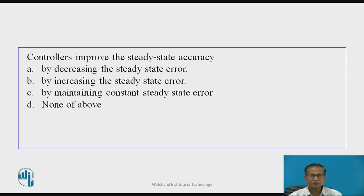Try to answer this question: controllers improve the steady state accuracy — option A: by decreasing the steady state error; option B: by increasing the steady state error; option C: by maintaining constant steady state error; option D: none of the above. The correct option is A — by decreasing the steady state error.